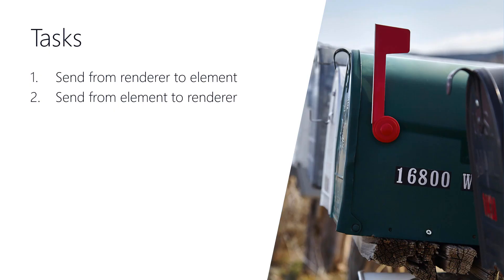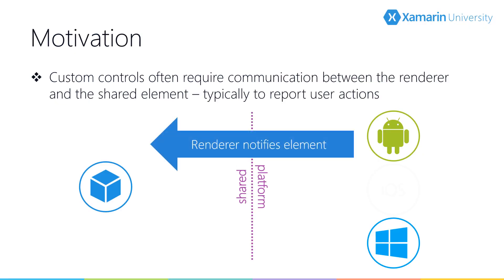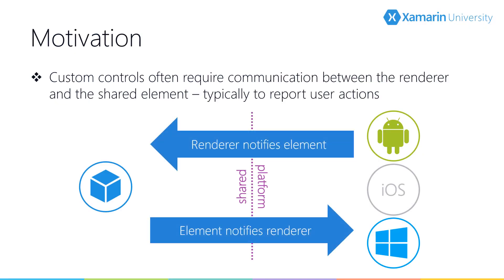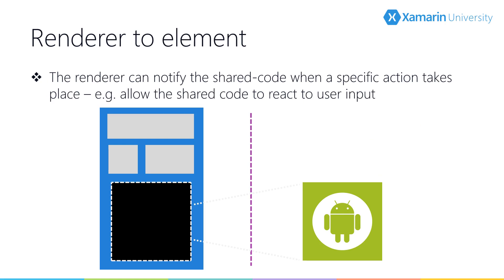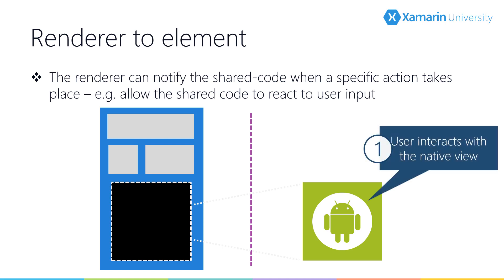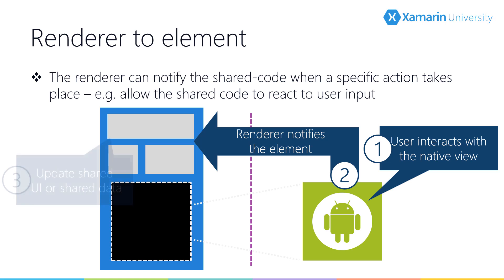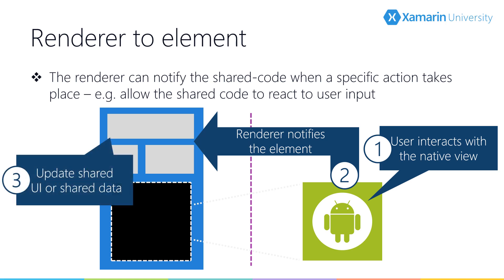First we'll talk about sending information from the renderer to the element, and then we'll talk about sending information from the element to the renderer. Often when extending existing controls or defining custom controls, we need to send notifications between the shared Xamarin Forms definition and the platform-specific renderers — and we want to do this without creating strong references between the element and the renderer that can get in the way of the garbage collector and possibly cause memory leaks.